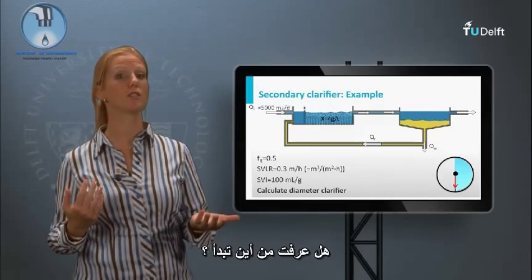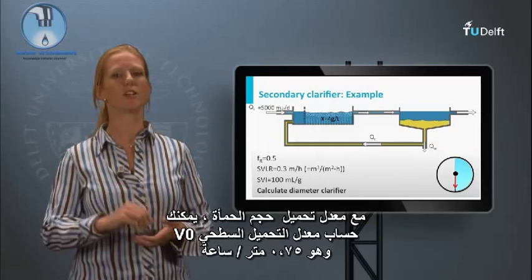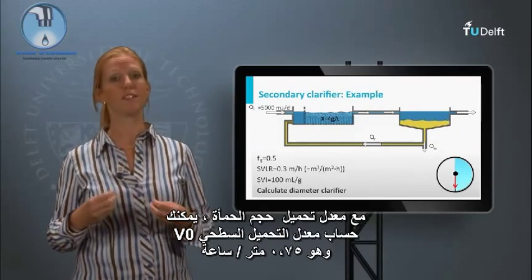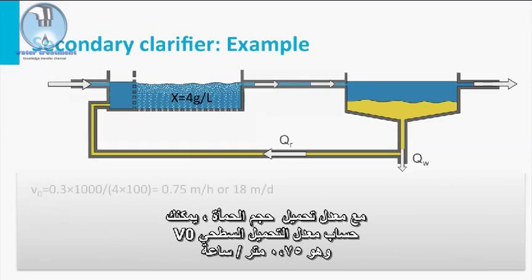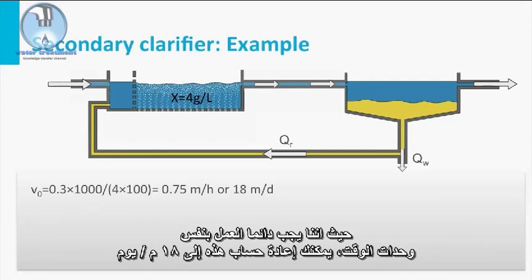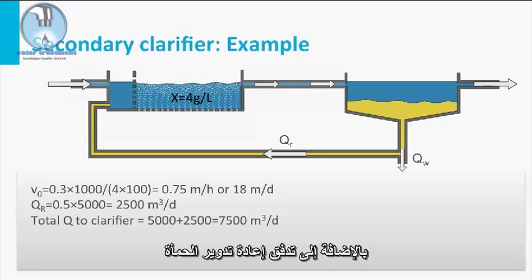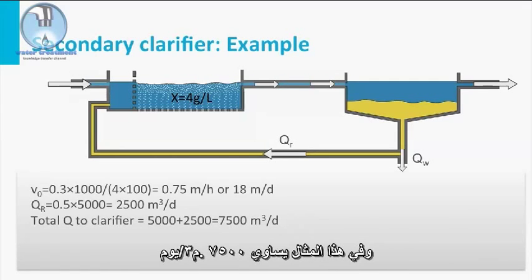Have you figured out where to start? With the sludge volume loading rate, you can calculate the surface loading rate V0, which is 0.75 meters per hour. Since you always have to work with the same time units, you can recalculate this to 18 meters per day. Then you have to calculate the flow to the final clarifier, which is the influent flow plus the sludge recycle flow. In this example that equals 7,500 cubic meters per day.